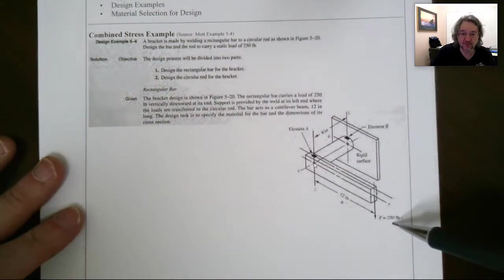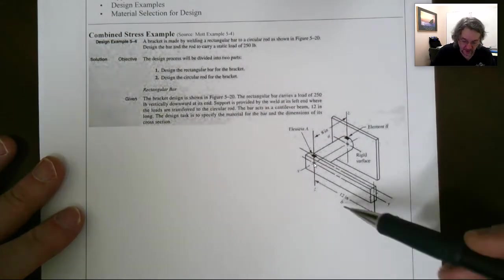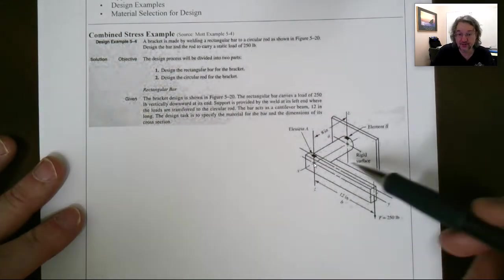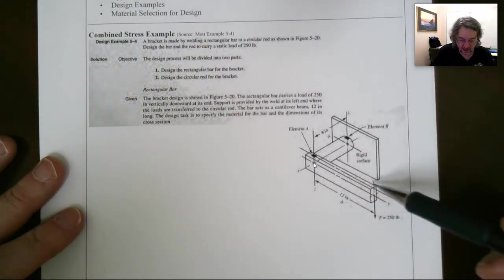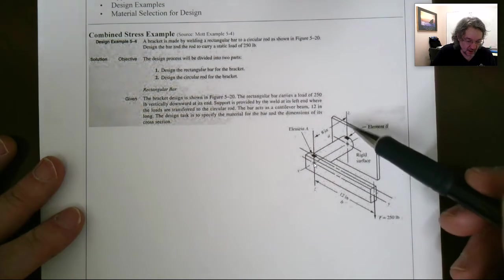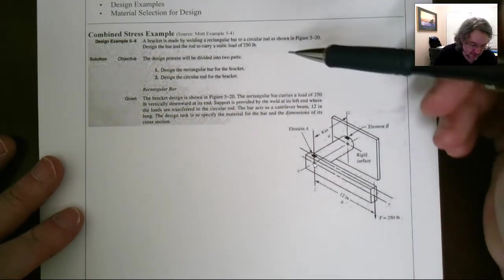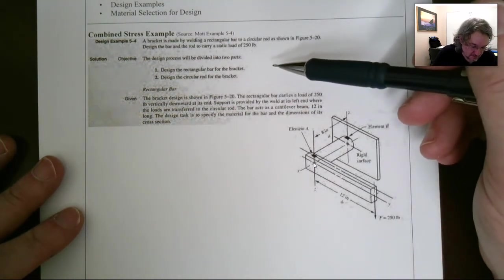Where it's got 250 pound load coming down. It's 12 inches across this way, 8 inches across here. So basically we want to pick out the dimensions. And we also want to pick out the material. So, let's begin.